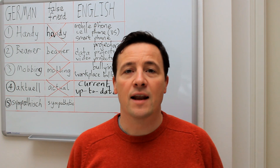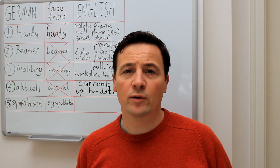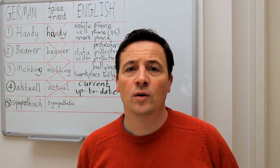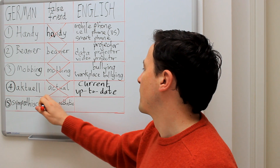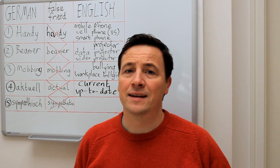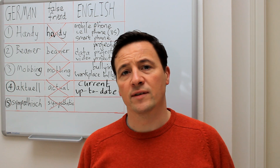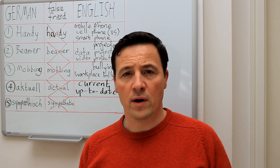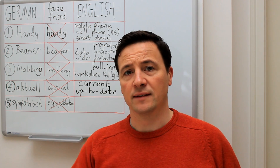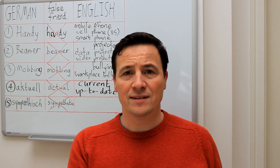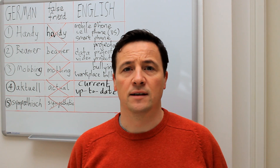Finally, the last false friend in this video is the German word 'sympathisch', which in English does not mean 'sympathetic'. Sympathetic in English means when you understand somebody else's feelings — if another person feels sad or emotional and you understand that, then you are sympathetic to their feelings. But 'sympathisch' in German normally means likeable, and sometimes it can mean friendly as well.